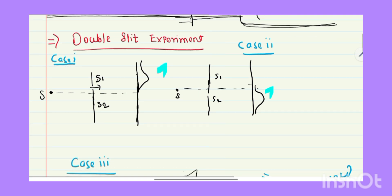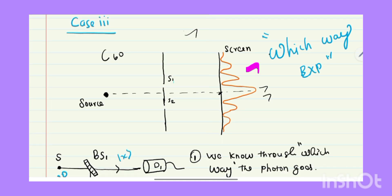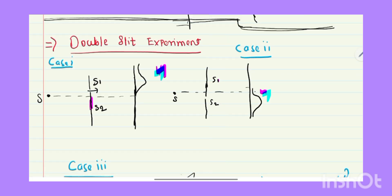Let me start with the double slit experiment. In the double slit experiment, we have two slits and we are entering photons one by one through these slits. If I close slit 2 and open only slit 1, this will be the intensity pattern on the screen. If I close slit 1 and open slit 2, the maximum will be against slit 2. If I open both slits, the resultant intensity pattern is due to interference of light reaching from both slits S1 and S2.